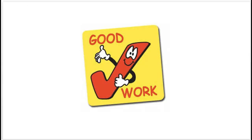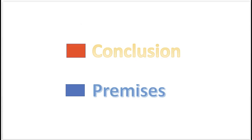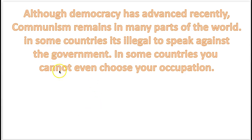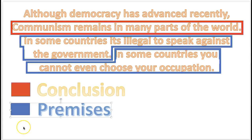Here's something new: some statements in arguments are neither premise nor conclusion. It's not always the case that every statement appearing in an argument is a premise or conclusion — some statements are merely introductory or passing comments. For example: 'Although democracy has advanced recently, communism remains in many parts of the world. In some countries, it's illegal to speak against the government. In some countries, you cannot even choose your occupation.' The conclusion is in the red and the premises are in the blue. Notice the first statement is neither a premise nor a conclusion — it's simply an introductory statement.